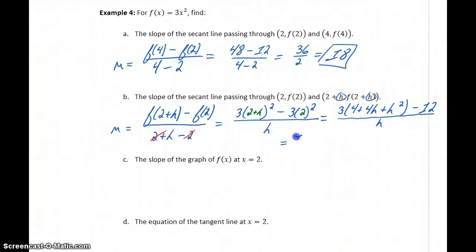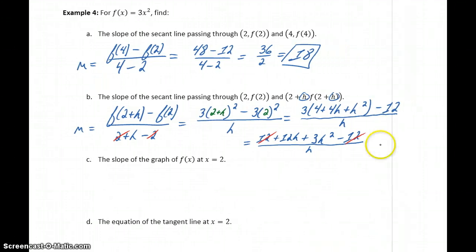So distributing the 3 through, we'll get 12 + 12h + 3h squared minus 12, still all over h. Now what we'll see is that the 12 minus 12 cancels, leaving us with 12h + 3h squared over h.